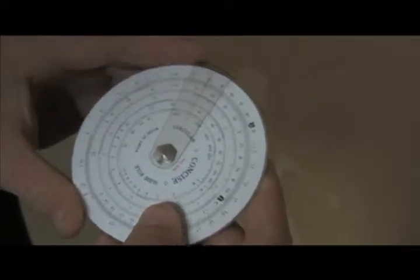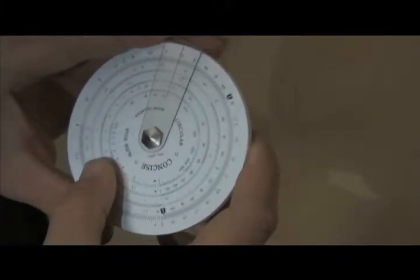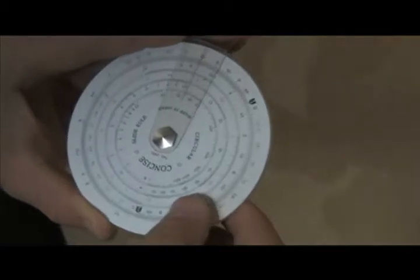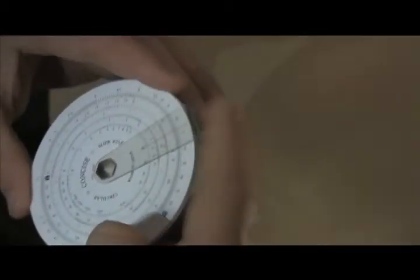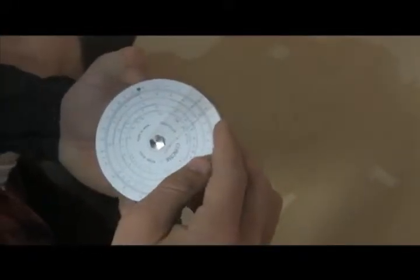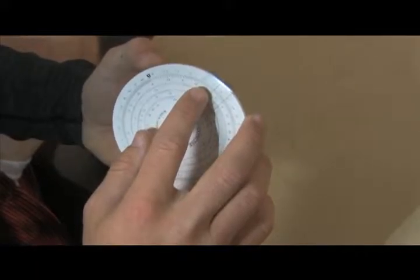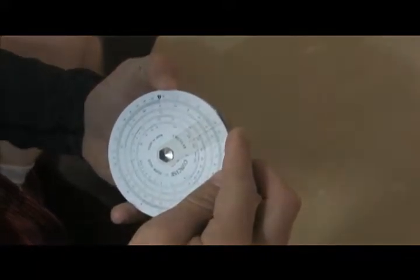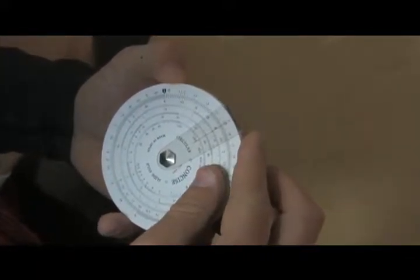Now we're going to take 2.5, move scale C here to 2.5 times 6, and we're going to get 15. Now on scale D, it does say 1.5. However, if you move the decimal place with some common sense, you'll get 15.